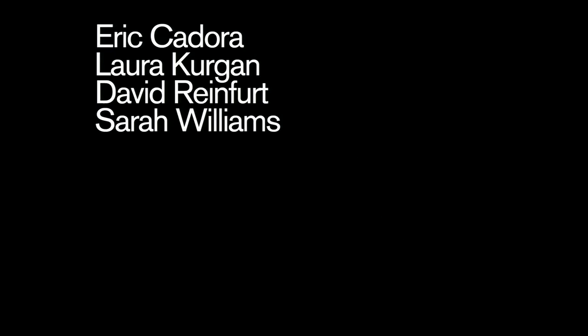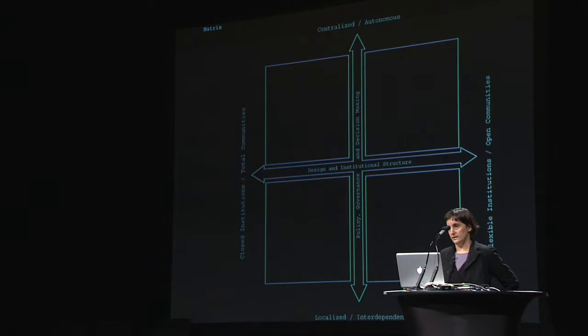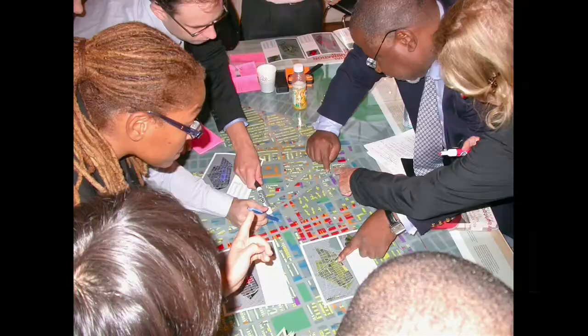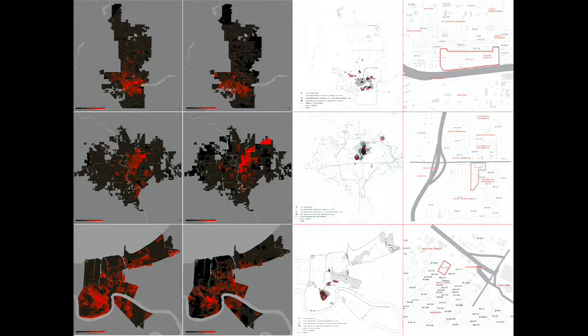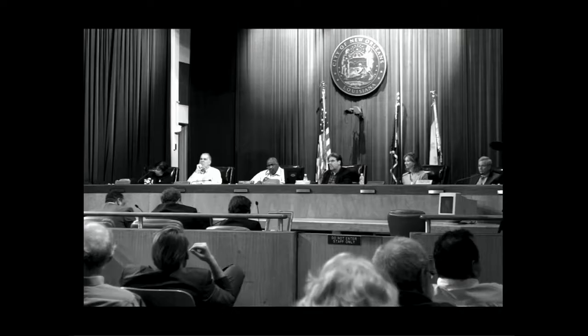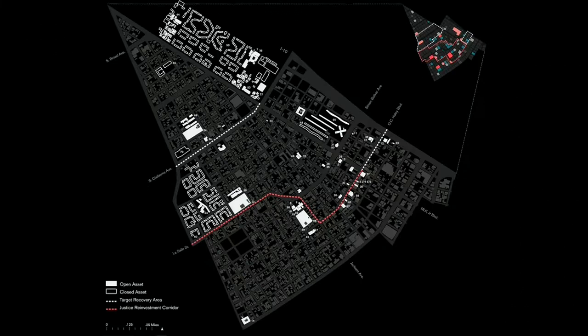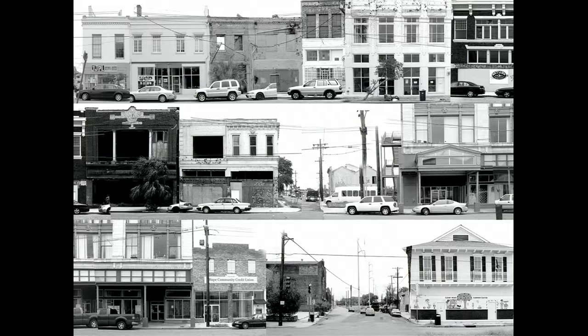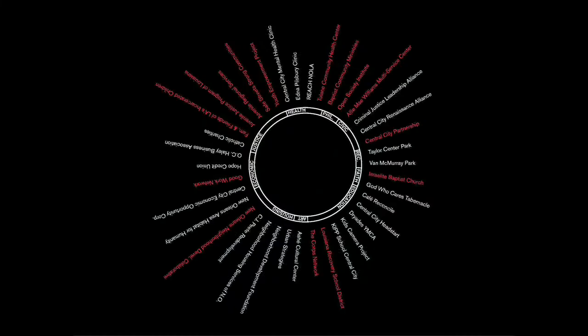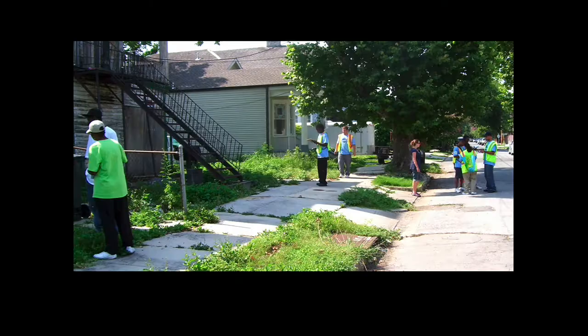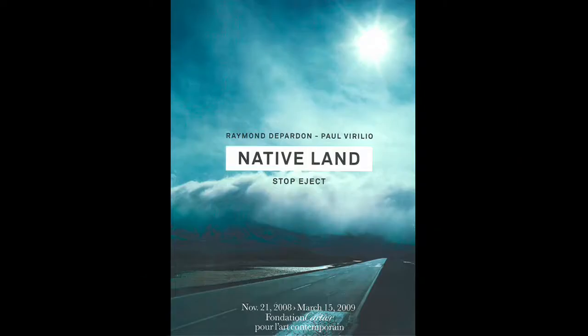Eric Cadora is the prison activist who runs the Justice Mapping Center. Our team includes me as an architect, David Reinford as a graphic designer, and Sarah Williams as an urban planner. We've tried to host scenario planning workshops combining all agencies together to come up with solutions. We've done this work across the country and are currently working on a justice atlas with up-to-date 2008 incarceration information for 25 states. We've also proposed a justice reinvestment corridor in New Orleans.